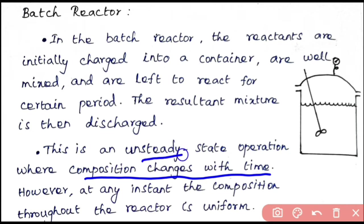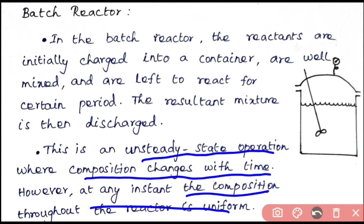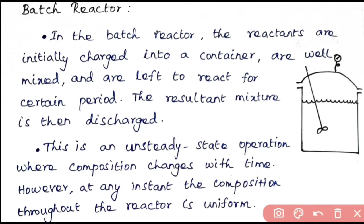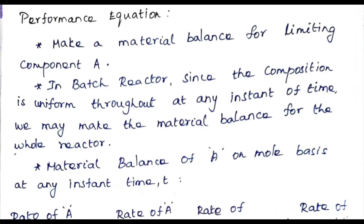In a batch reactor, composition changes with respect to time, so this process is known as unsteady state operation. However, at any instant, the composition throughout the reactor is uniform, and to maintain this uniform composition we must provide complete mixing inside the reactor.